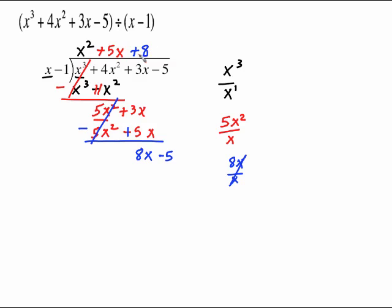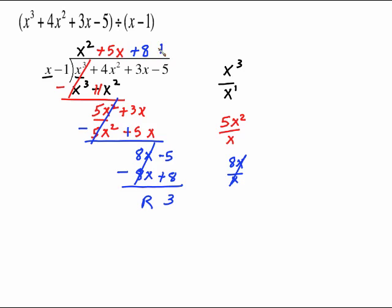Come back and multiply: 8 times the whole thing is 8x minus 8. Draw the line. Change those signs — cancels out. And we get a remainder of positive 3. So we come up here and put plus 3 over x minus 1.